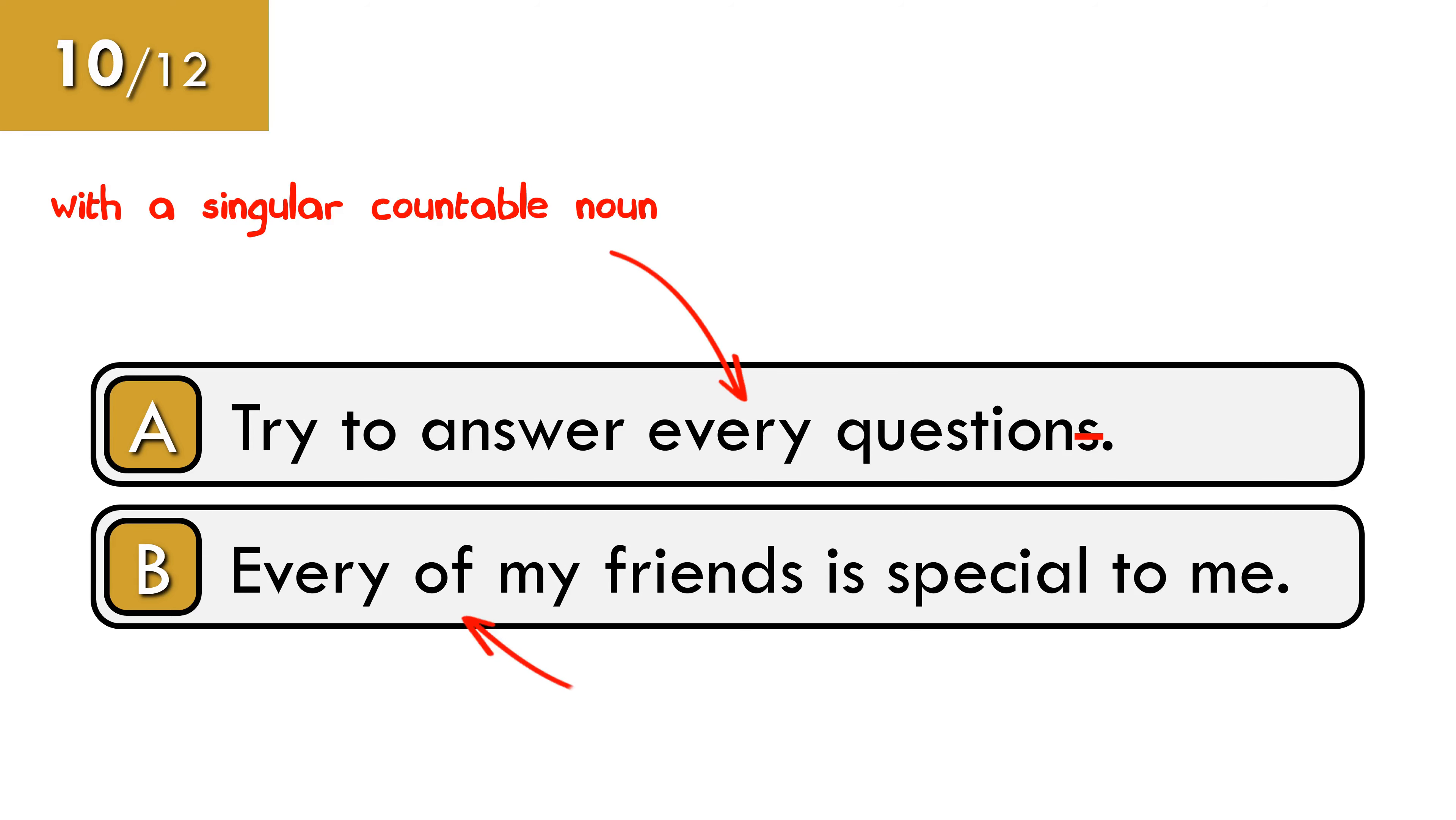We do not use of after every. We can use every one of to refer to each individual member of the group. Every one of is followed by a plural noun or pronoun, but the verb is usually singular.